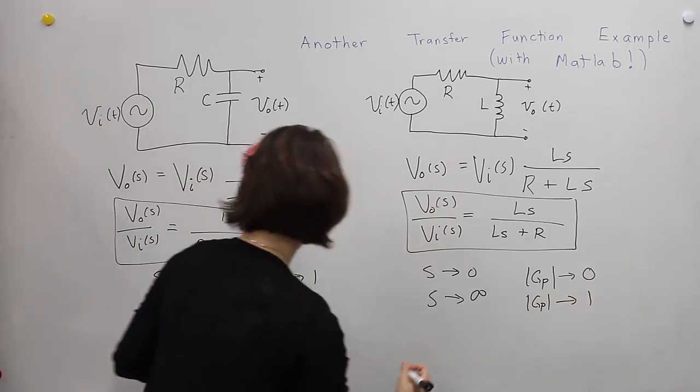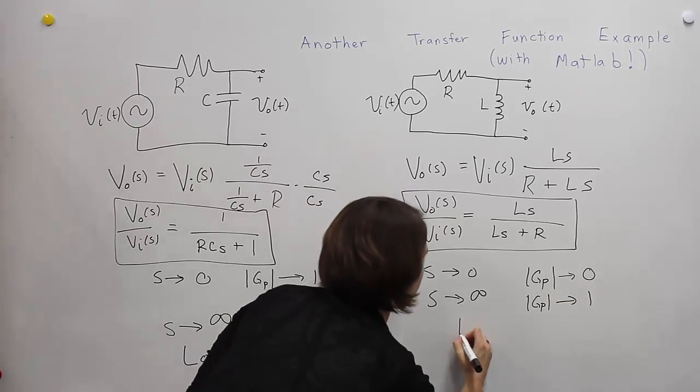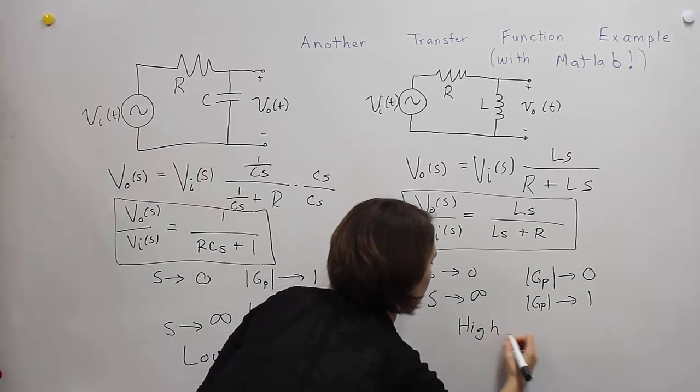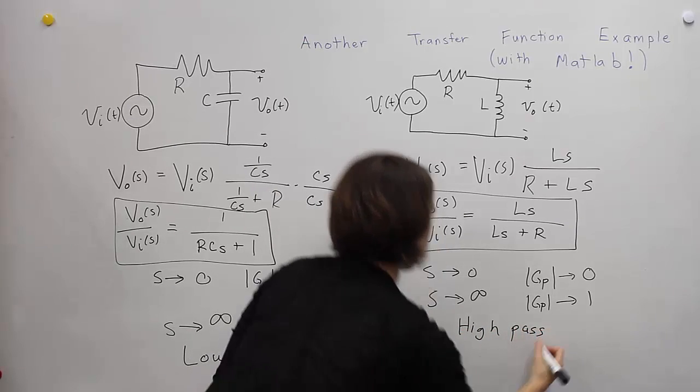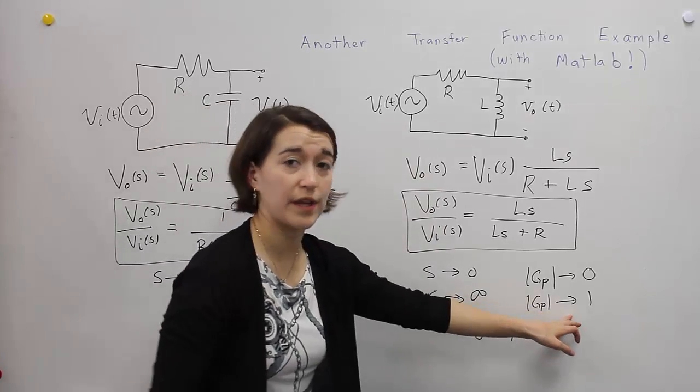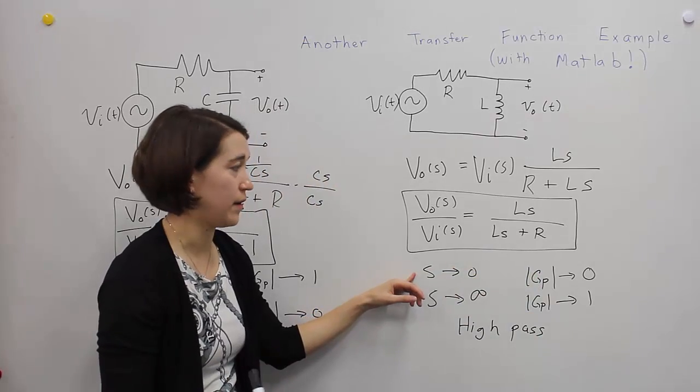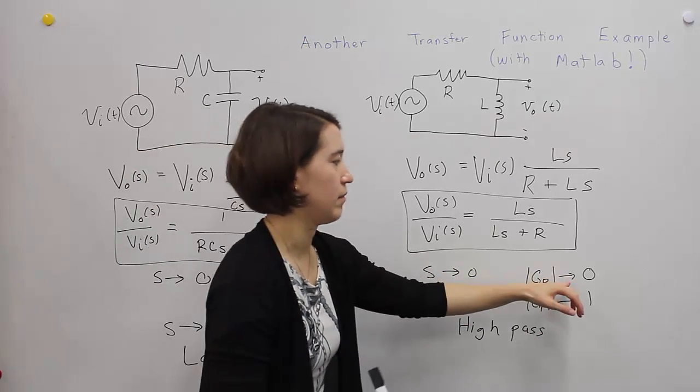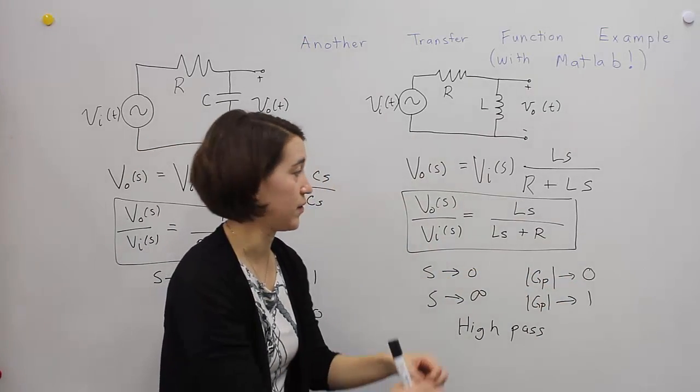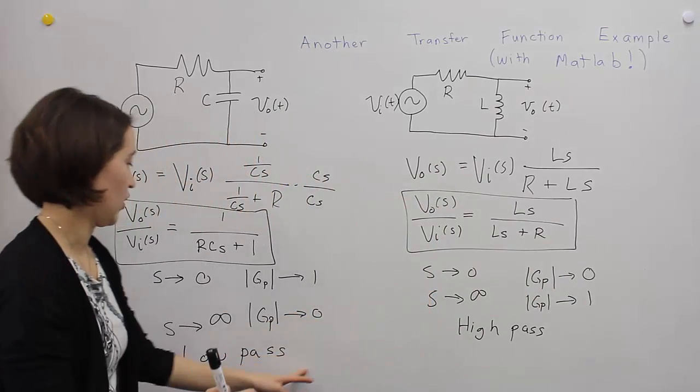And so this would be a high pass. Because high frequencies are allowed to go through, the gain is 1, the signal is maintained. And low frequencies, like DC, the signal is dampened to 0. So this would be a high pass and a low pass.